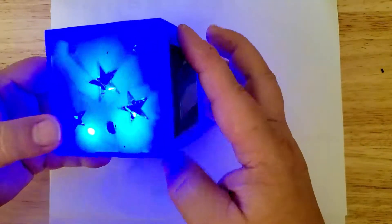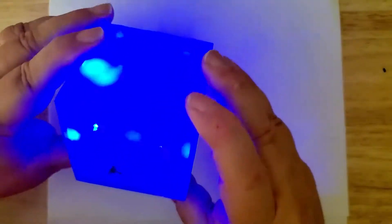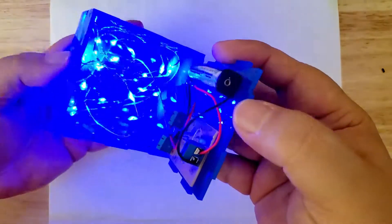This is a semi-transparent blue acrylic box where I have cut stars into it and put blue LEDs inside.